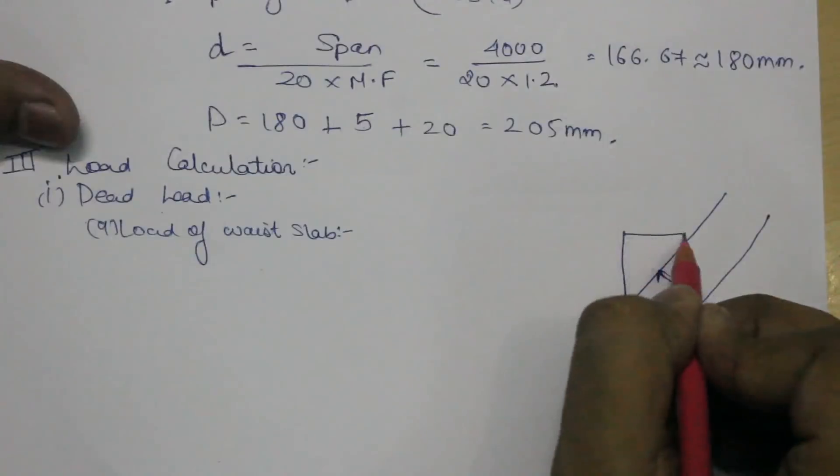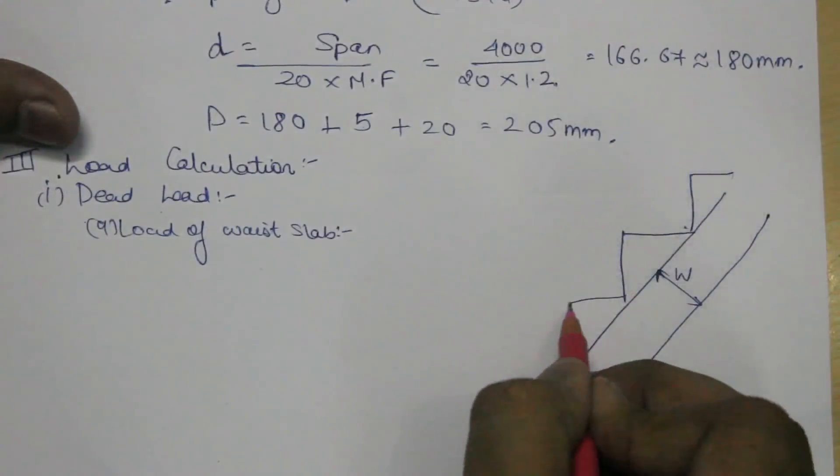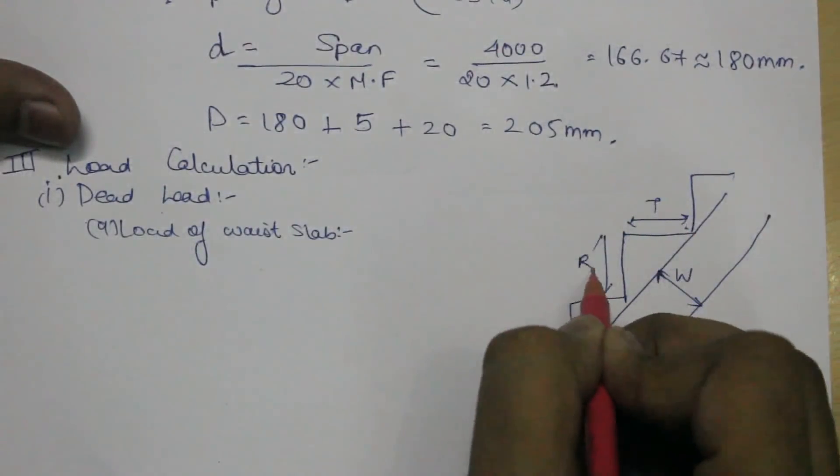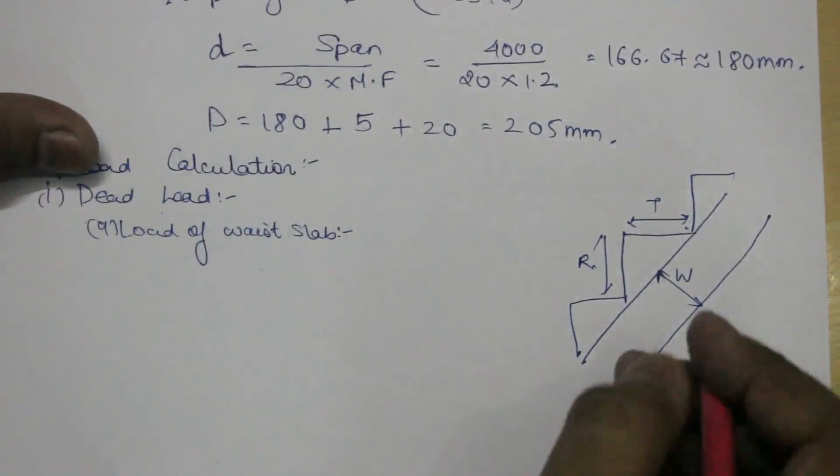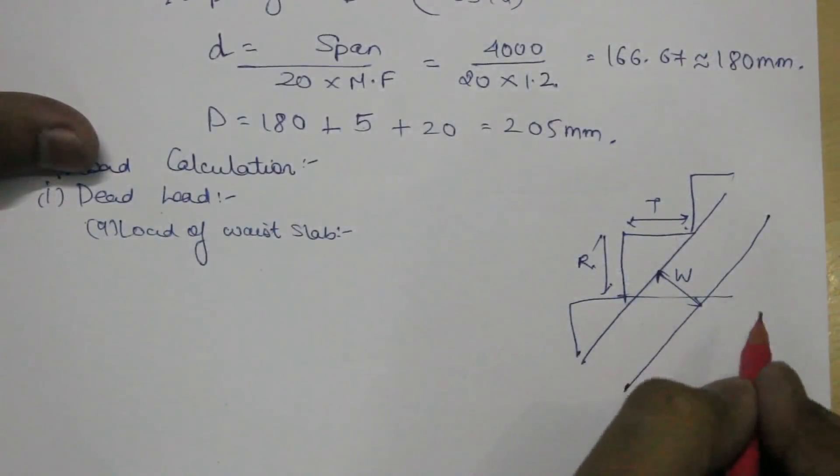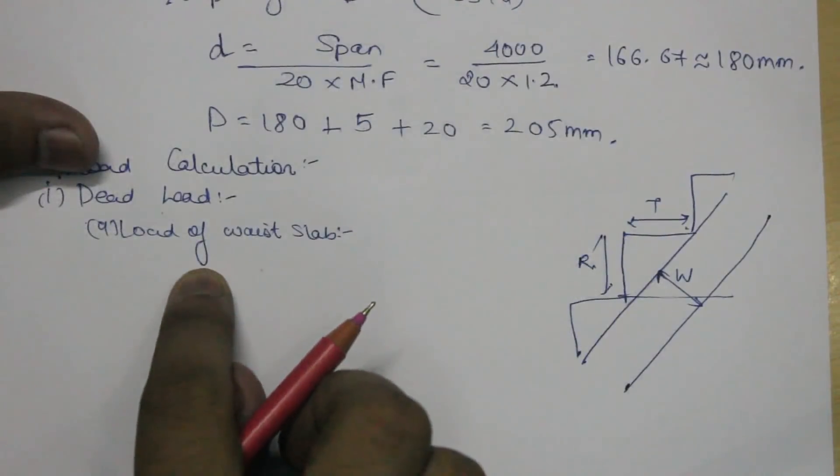Suppose this is our step, and this is the step, and this is the waist slab, and this is the tread, and this is the riser. In the design of staircases it is assumed that the load is acting horizontally on the waist slab and not inclined.